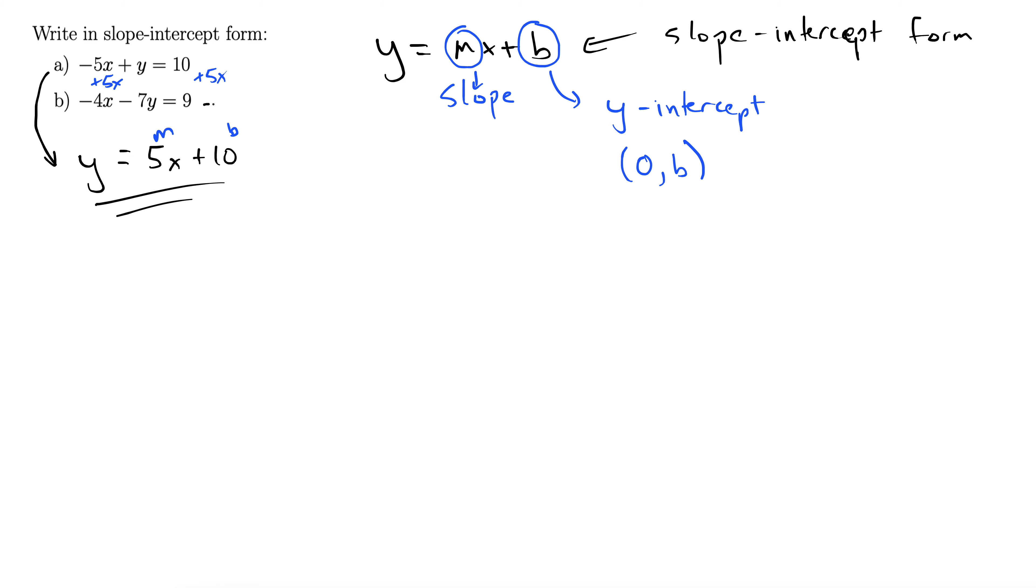Let's try equation b. We're going to rewrite that: negative 4x minus 7y equals 9. We want to write this in slope-intercept form, so the idea is to solve for y.